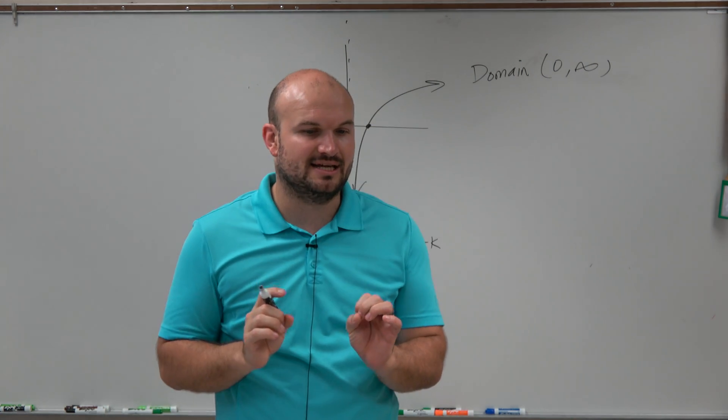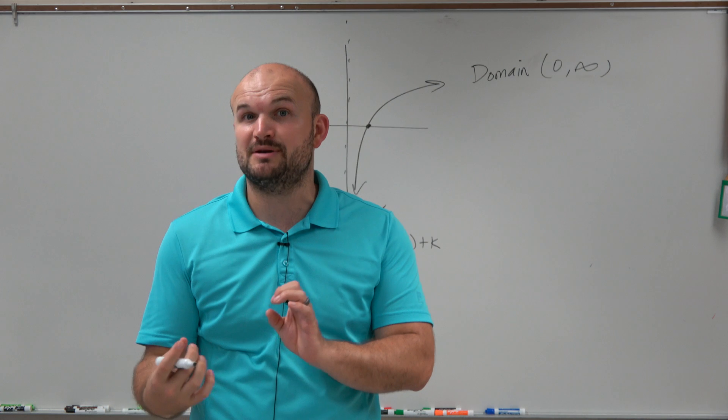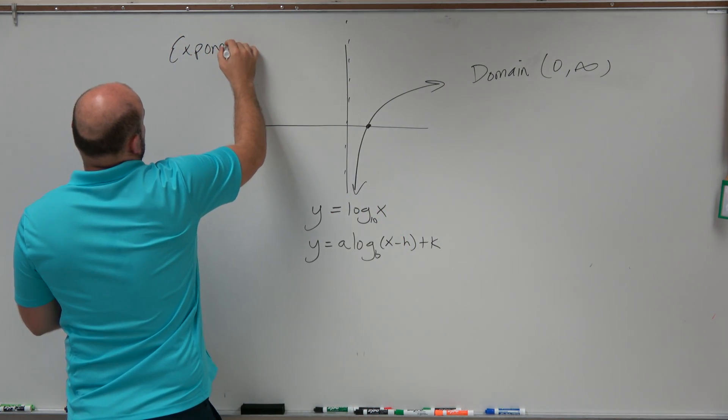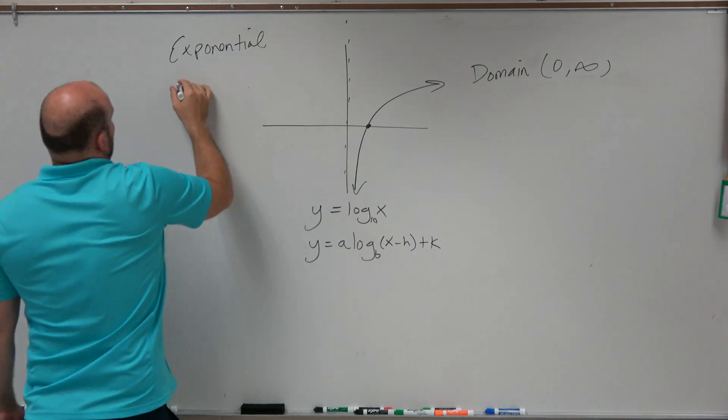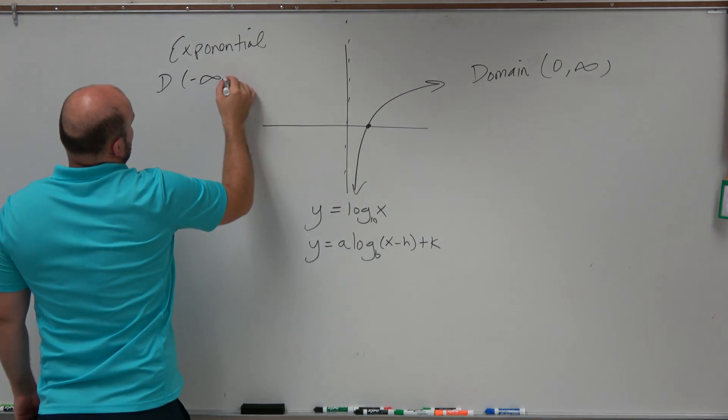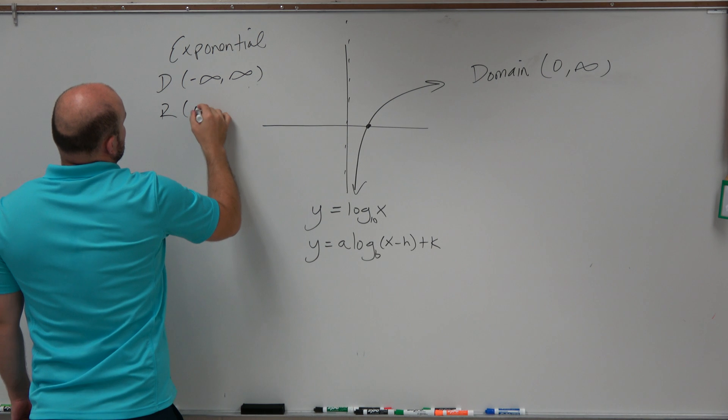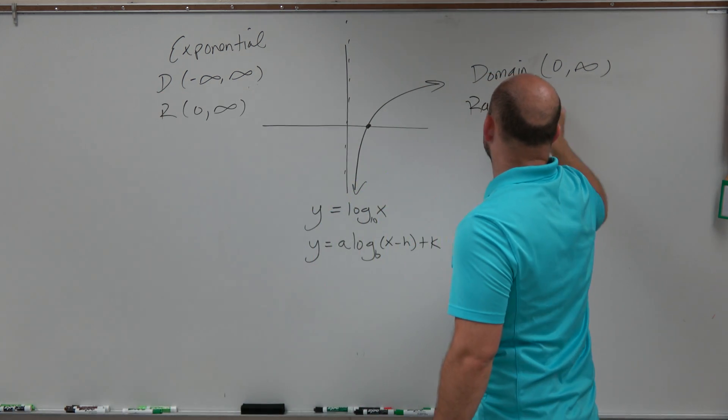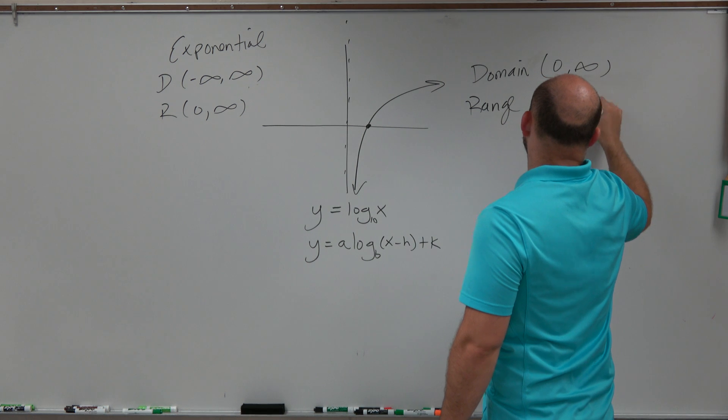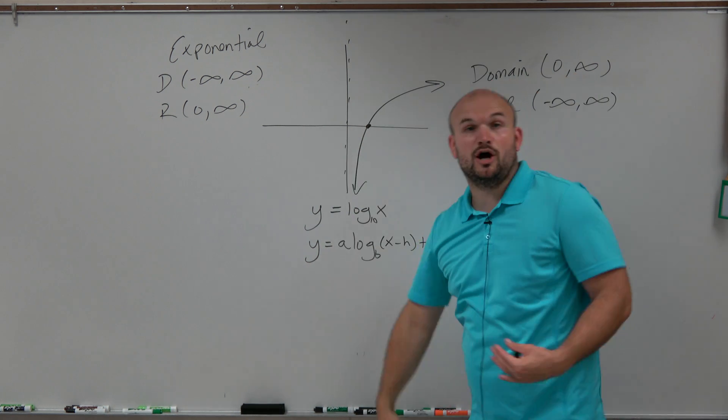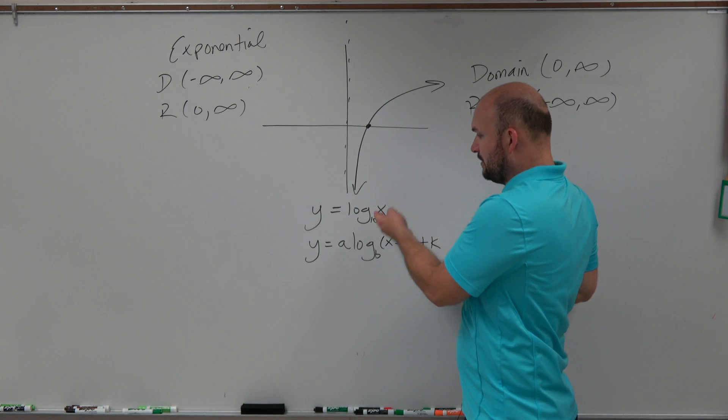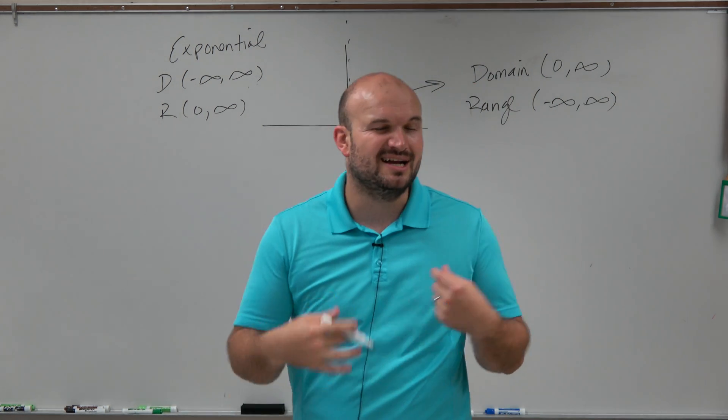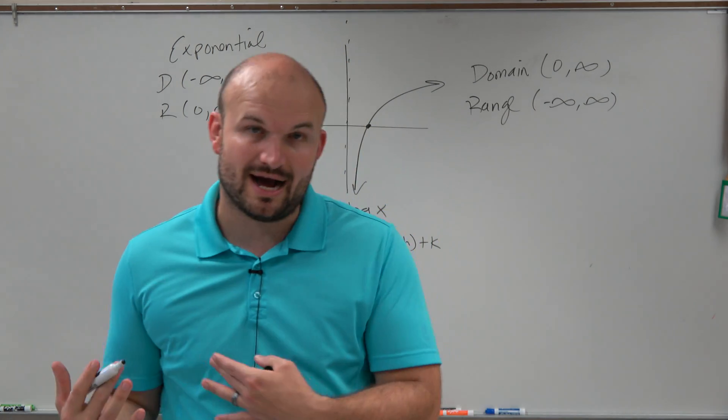Also note that the domain of logarithms and exponential functions are inverses of each other. So exponential functions, the domain was negative infinity to infinity and the range was 0 to infinity. Well, guess what? The range here is going to be negative infinity to infinity. Right? It looks like it's going all the way down and then it's going all the way up. And it doesn't matter whatever value you plug in for x, you're always going to get a value for y. And there's no limit as far as how low or how high you can go.